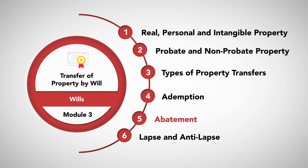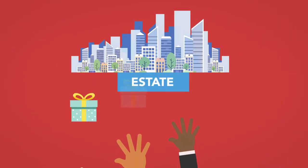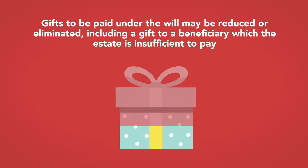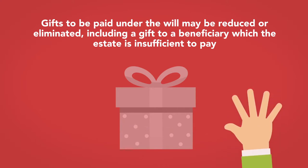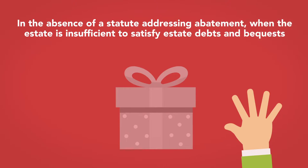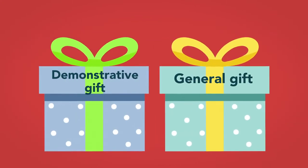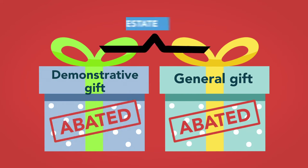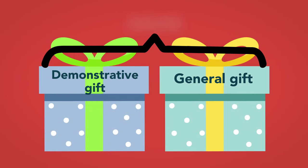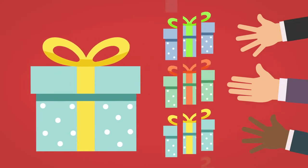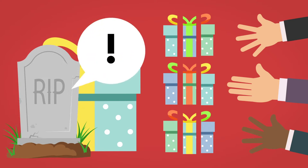Abatement. Abatement occurs when a testator's estate is insufficient to satisfy all debts and testamentary gifts. In such cases, gifts to be paid under the will may be reduced or eliminated, including a gift to a beneficiary which the estate is insufficient to pay. In the absence of a statute addressing abatement, when the estate is insufficient to satisfy estate debts and bequests, the residuary gift abates first, since if there are insufficient assets to cover debts and gifts, there is nothing left for the residuary estate. The general gift abates before the demonstrative gift, assuming the purported source of the gift is still in the estate. If the source is not in the estate, the gift has the same status as the general gifts. Within the same category of gifts, each beneficiary bears a pro-rata burden of the abatement unless the testator clearly expresses an intent to prefer one bequest over another.